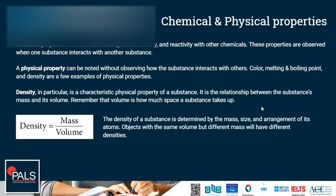Density, in particular, is a characteristic physical property of a substance. It is the relationship between the substance's mass and its unit volume. Remember that the volume is how much space a substance takes up. Density can be found by taking the mass of an object and dividing it by its volume. Objects with the same volume but different masses will obviously have different densities.